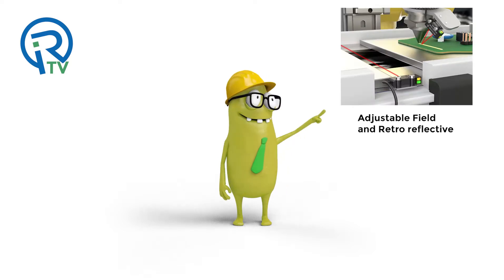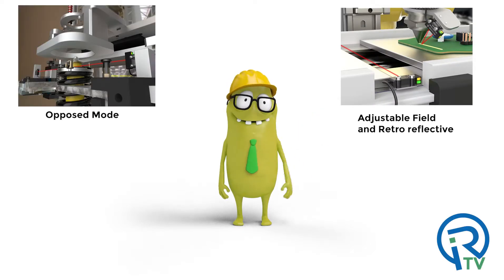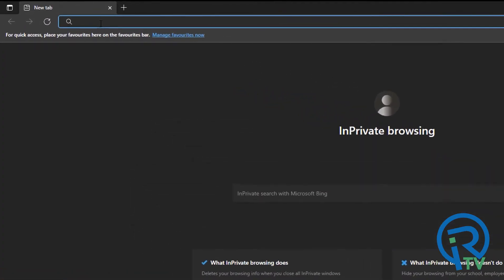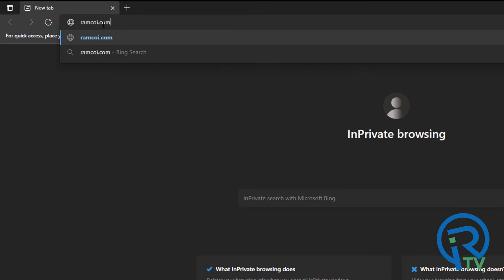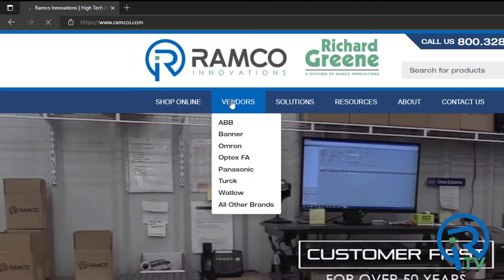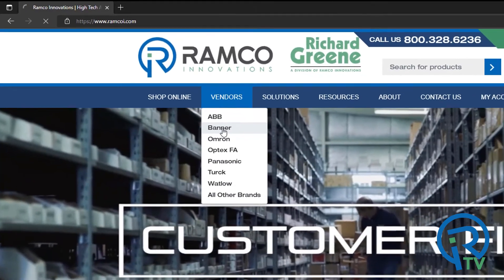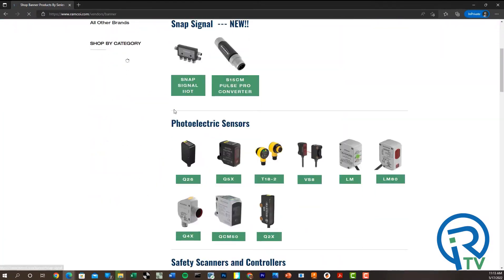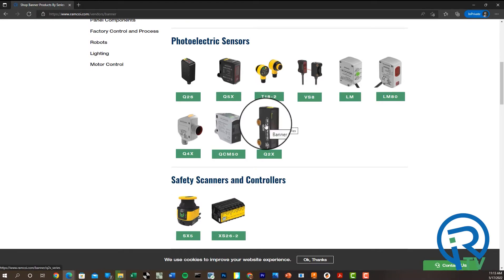Currently, the Q2X series is made up of adjustable field sensors as well as retro and opposed mode. Let's start with the adjustable field models. I'm going to open up a browser and navigate to ramcoi.com. Once there, hover over vendors and select banner. Next, I'll scroll down and select the Q2X series.